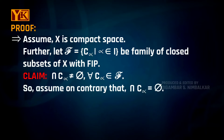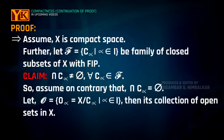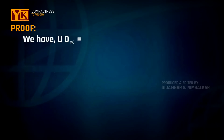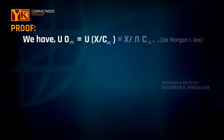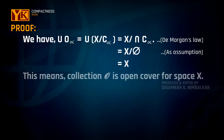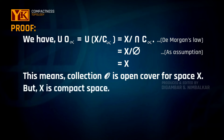Let us consider the collection O, where O-alpha equals X minus C-alpha for alpha in the indexing set. This collection O is a collection of open sets in X. Also, the union of O-alpha equals the union of (X minus C-alpha), which equals X minus the intersection of C-alpha. Since we assumed the intersection of C-alpha is empty, this equals X minus the empty set, which equals X. So the collection O is an open covering of the space X.